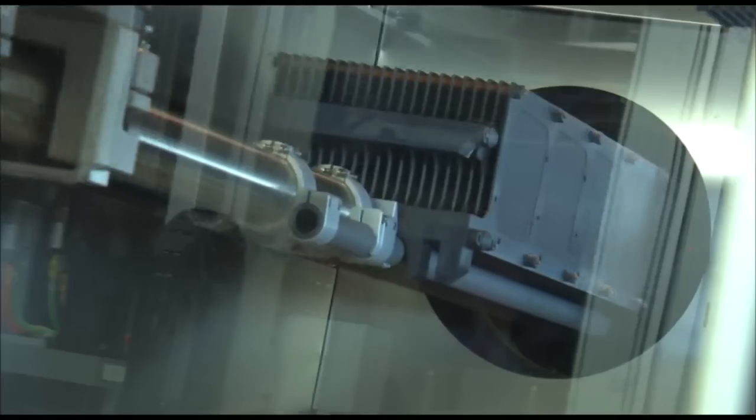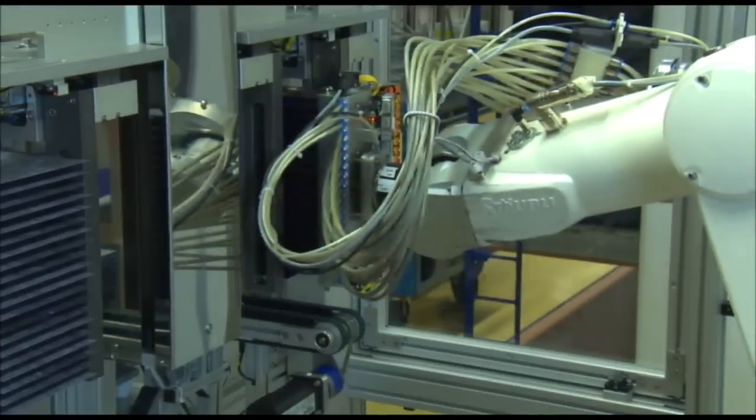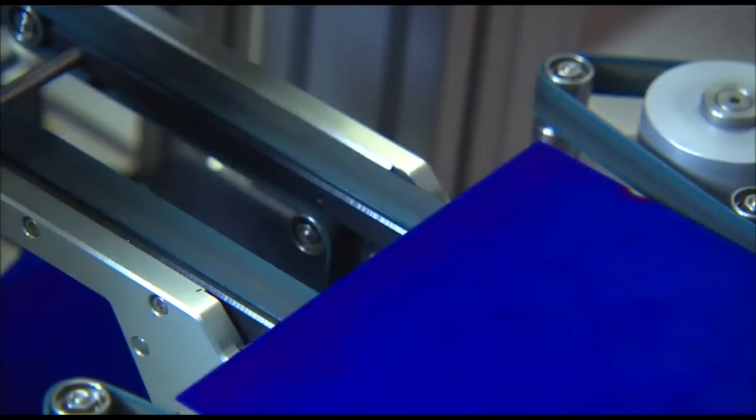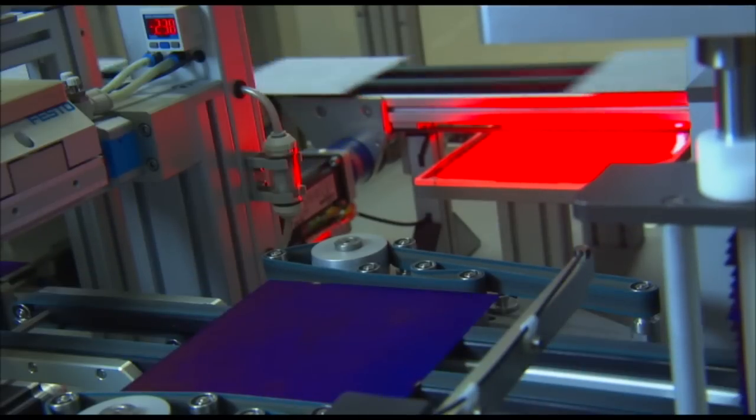The solar cells then enter a plasma chamber, where they are given their typical color. The blue surface reduces optical loss by preventing unwanted reflections. As a result, more light can enter the cells, and more power can come out of the cells.